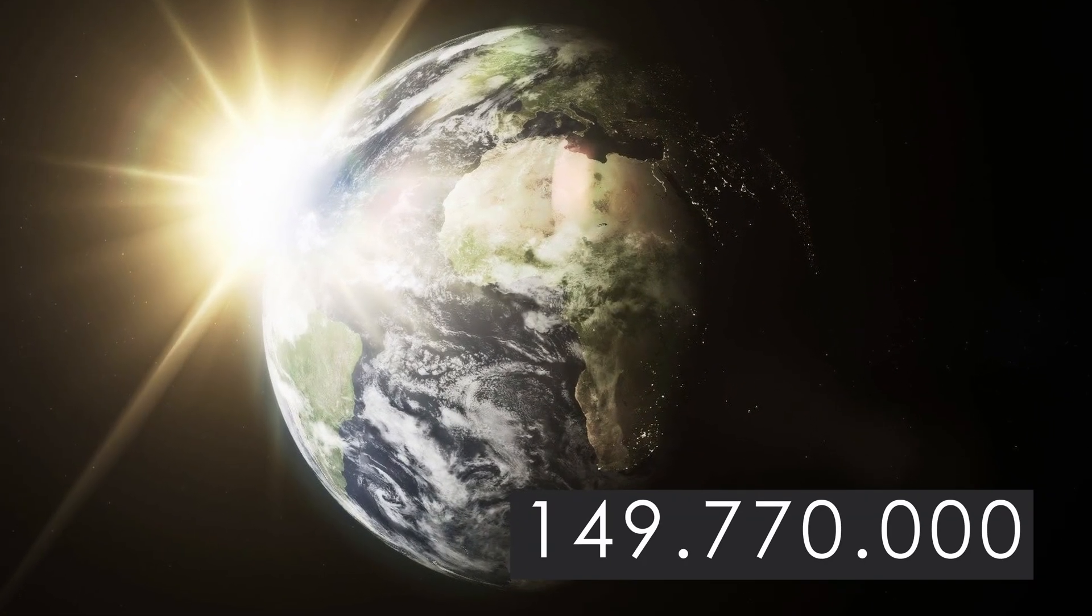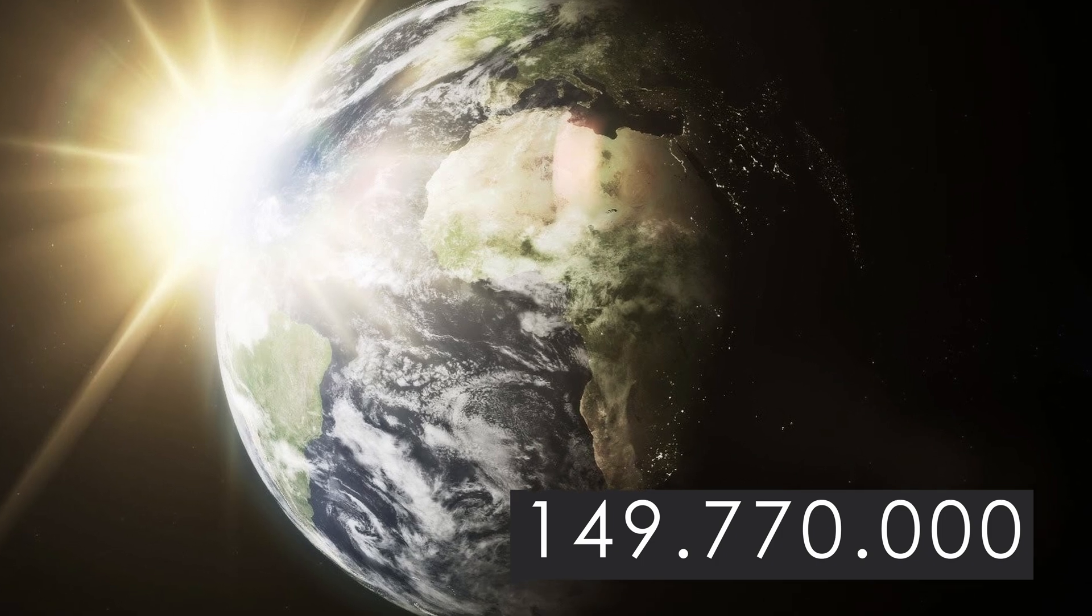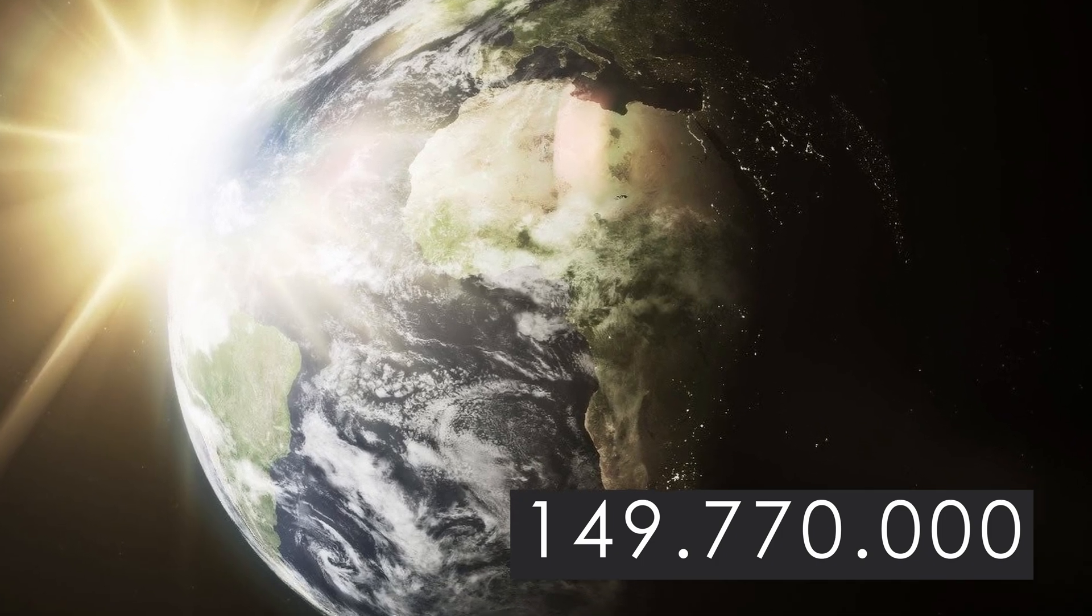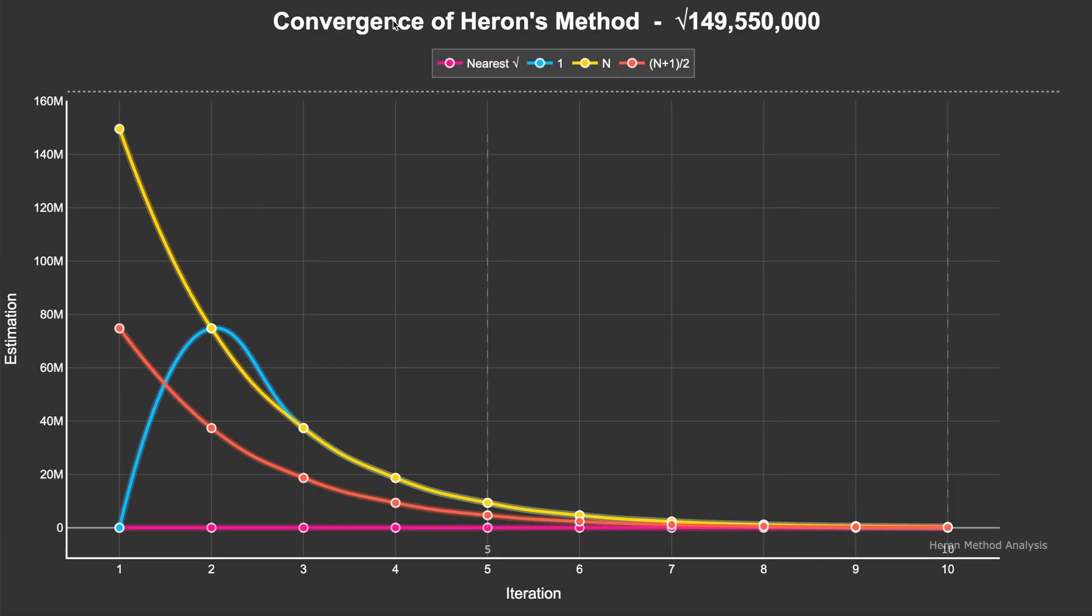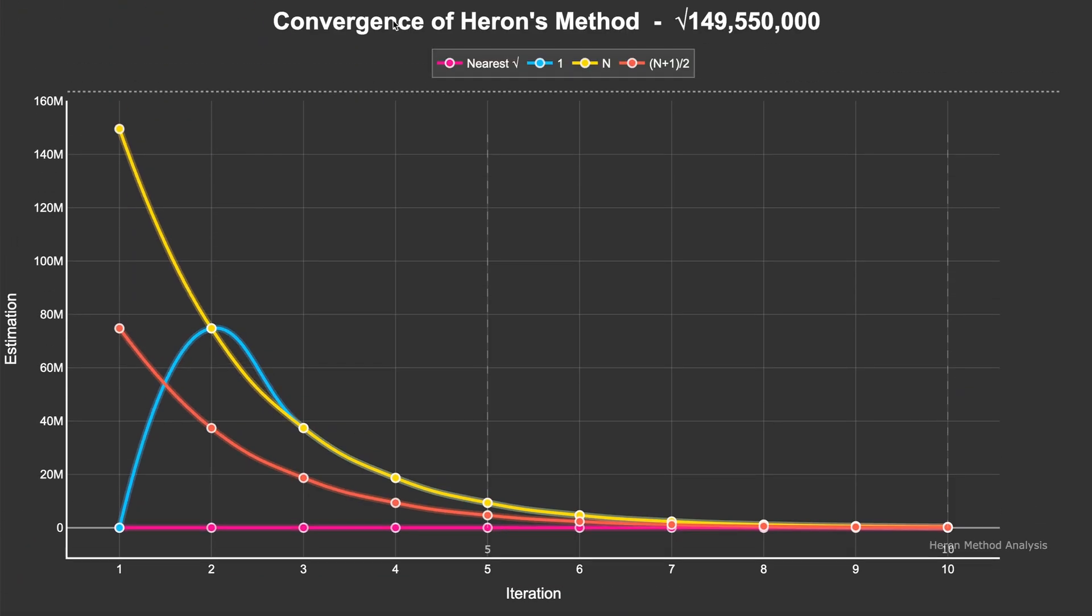Why not take about 150 million, which is approximately the distance between Earth and Sun? In the following, I will walk you over this plot that visualizes the convergence for finding the square root with four different initial guesses and their conversions.